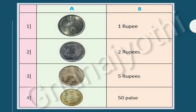Now look at this picture. Here there are column A and column B. In column A, there are some coins. So let us match column A with column B.